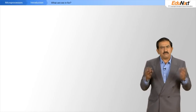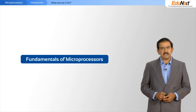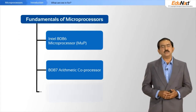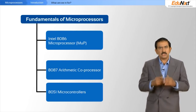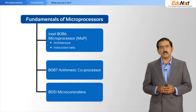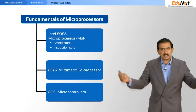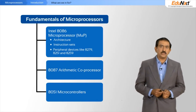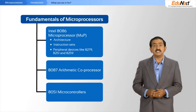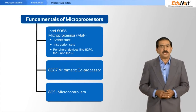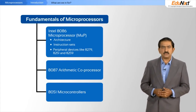What I will cover is a little bit of fundamentals on microprocessors in general, then zoom down very quickly into the 8086, talk about the architecture of the 8086, its instruction sets, and various peripheral devices that you need to work with the 8086 effectively — peripheral devices like the 8279, the 8251, the 8259, and so on.